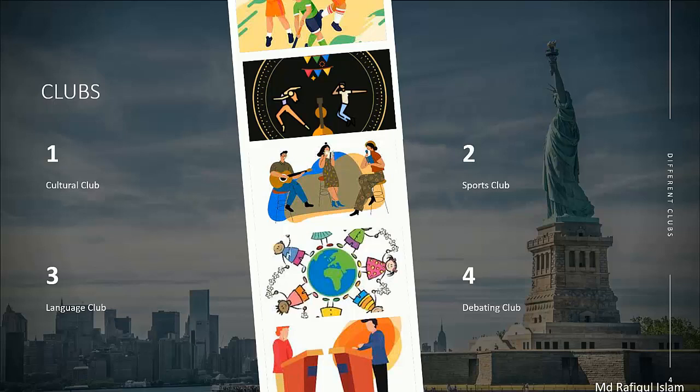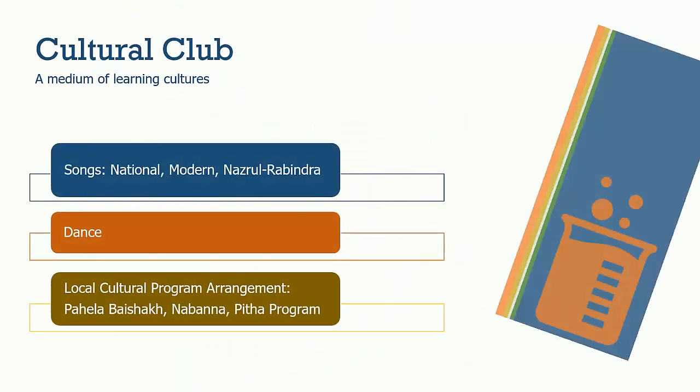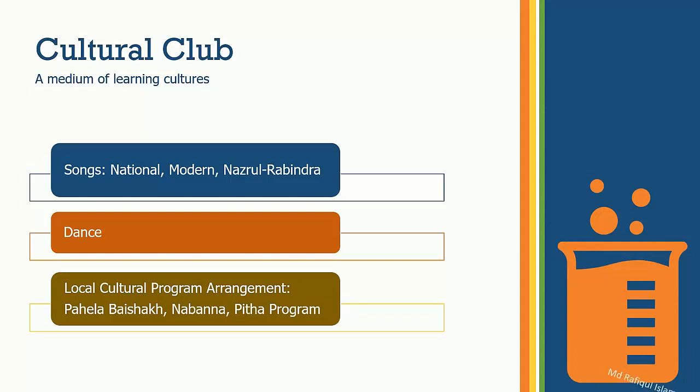Now the question is: what are the different types of clubs? Major clubs are cultural clubs, sports clubs, language clubs, debating clubs, ICD clubs, etc. New clubs can also be formed based on activity and skill development initiatives. Let's have a closer look at some of these clubs.